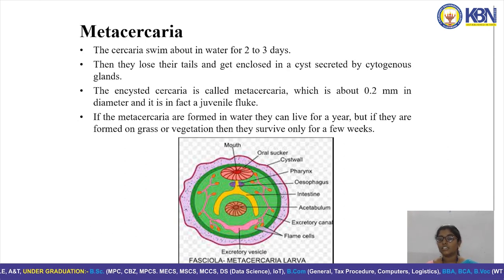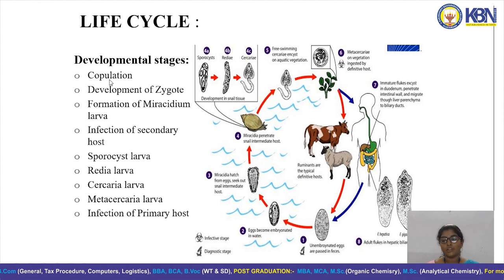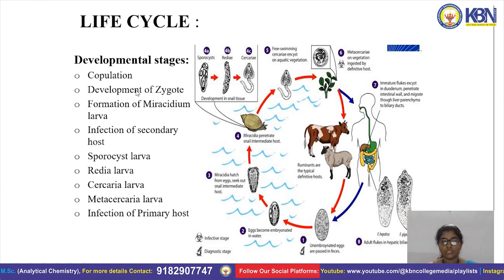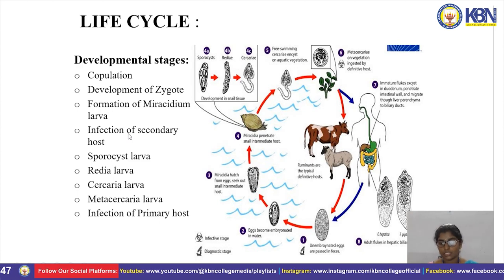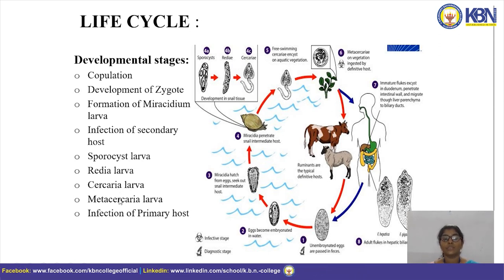This is the complete diagrammatic representation of the life cycle of Fasciola hepatica. On the left side we can observe the developmental stages: first copulation occurs in the host organism, then eggs are released, then the zygote develops, then miracidium larva forms. This infects the secondary host. The miracidium undergoes into sporocyst larva, then redia larva, then cercarial larva, then metacercarial larva, which leads to infection of the primary host.